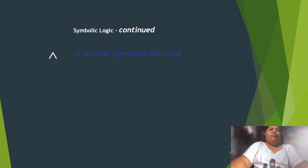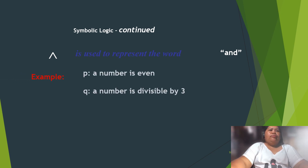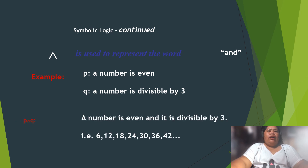The symbol '∧' is used to represent the word 'and.' Example: P is 'a number is even,' Q is 'a number is divisible by three.' So P and Q means a number is even and divisible by three — like 6, 12, 18, 24, 30, 36, 42, and so on.